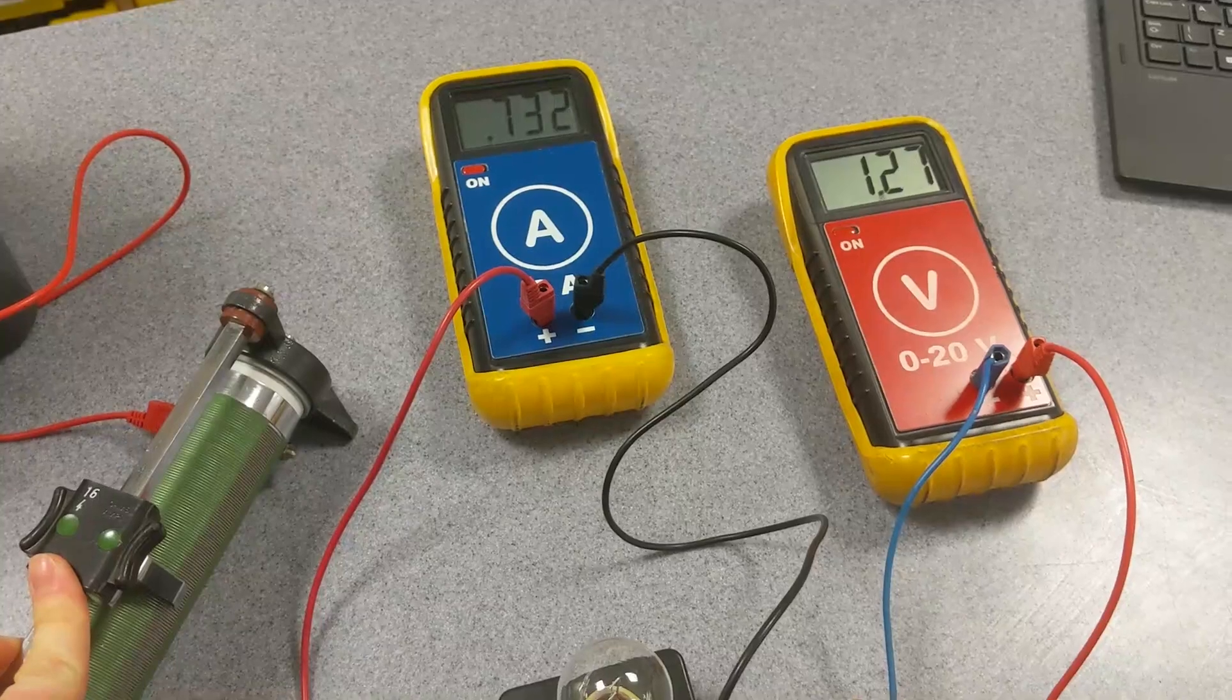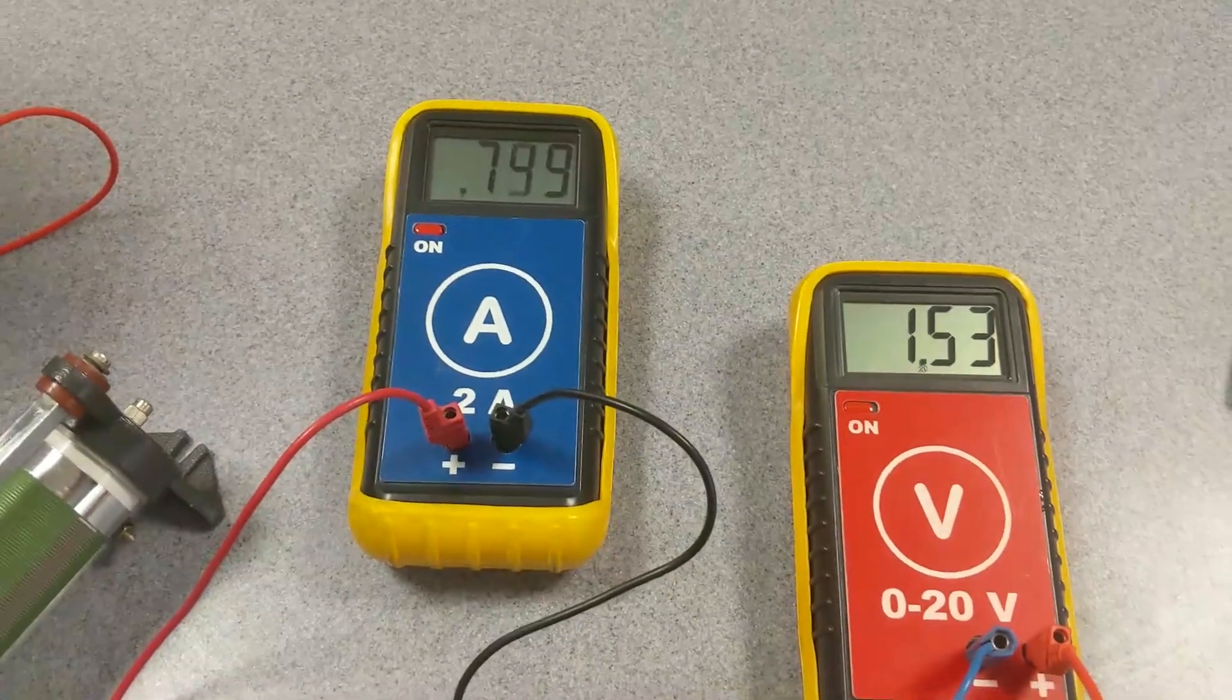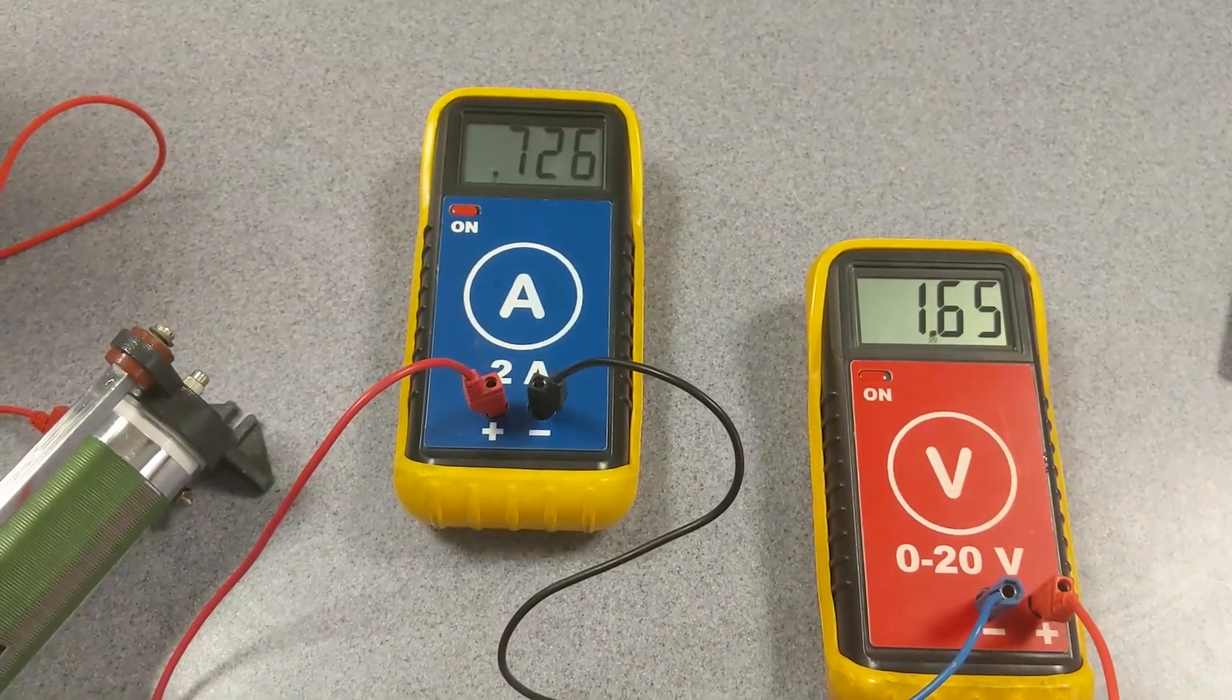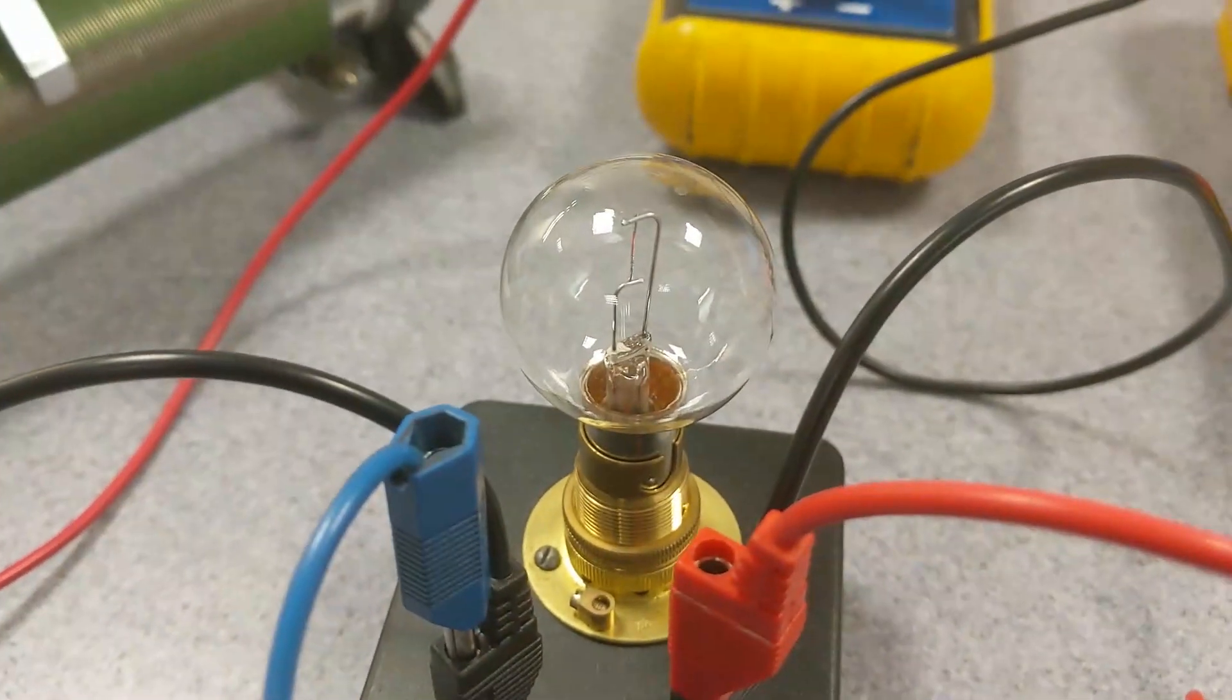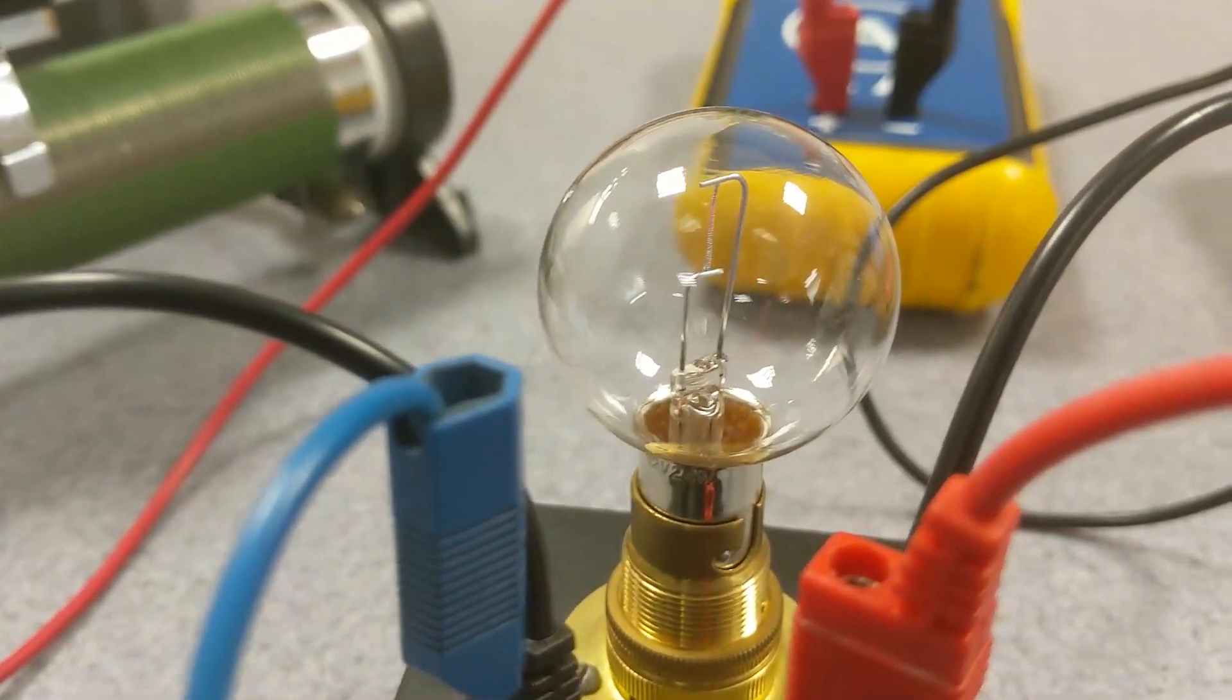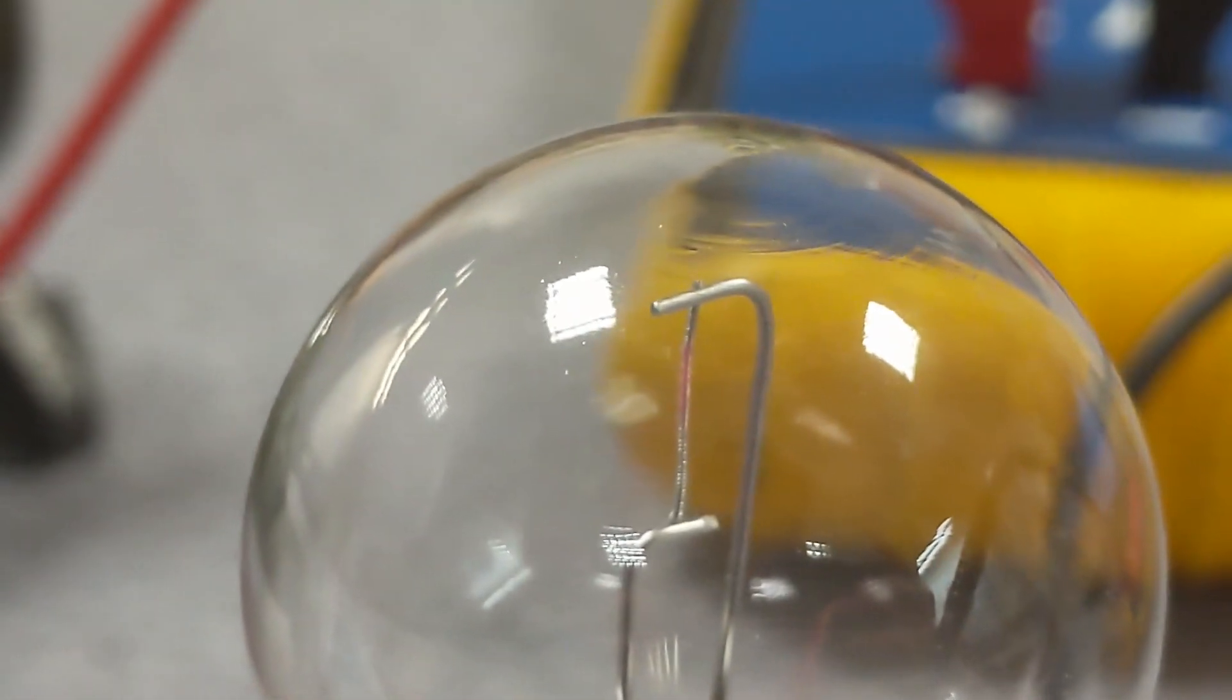Push that up to 1.5 volts. There. You can see the filament bulb is just starting to light up there. You can just see it turning red inside.